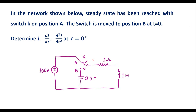In this video, let me consider one numerical on initial conditions. In the network shown below, steady state has been reached with switch K on position A. The switch is moved to position B at t equal to 0. Determine i, di by dt, and d square i by dt square at t equal to 0 plus.